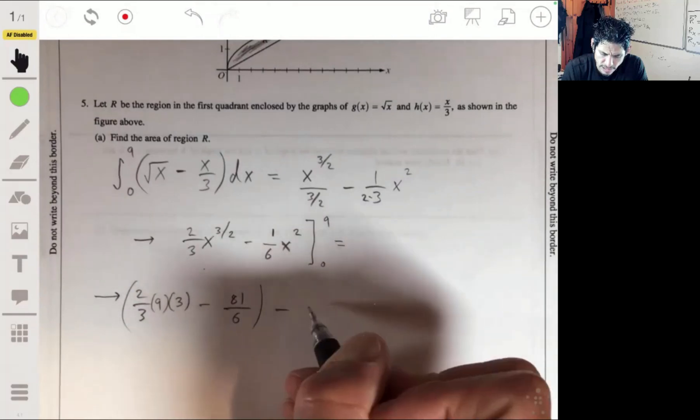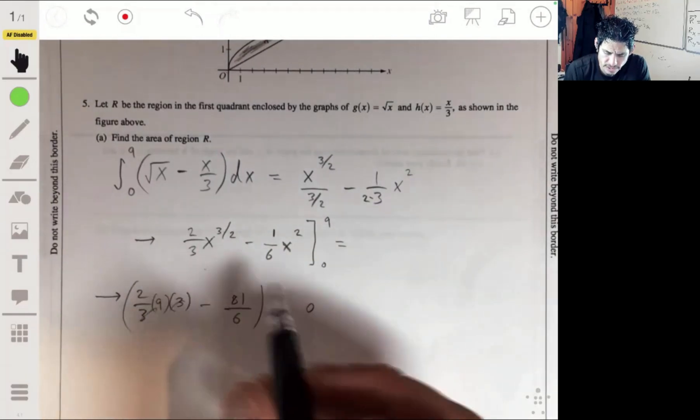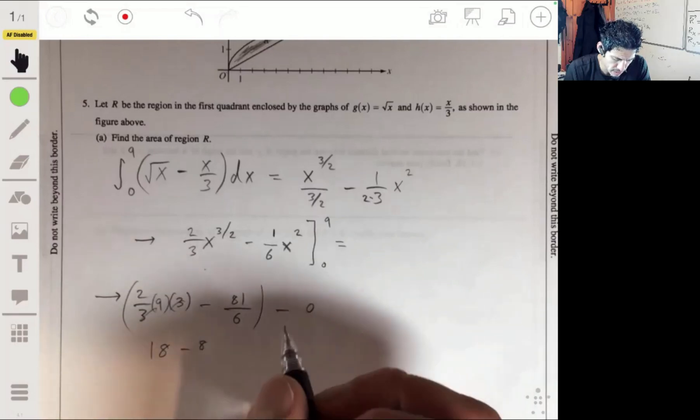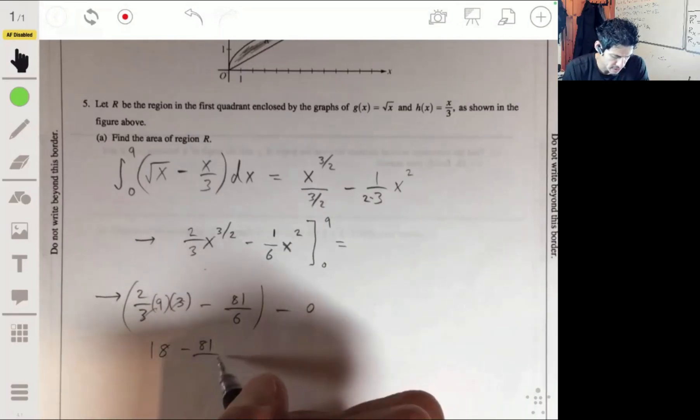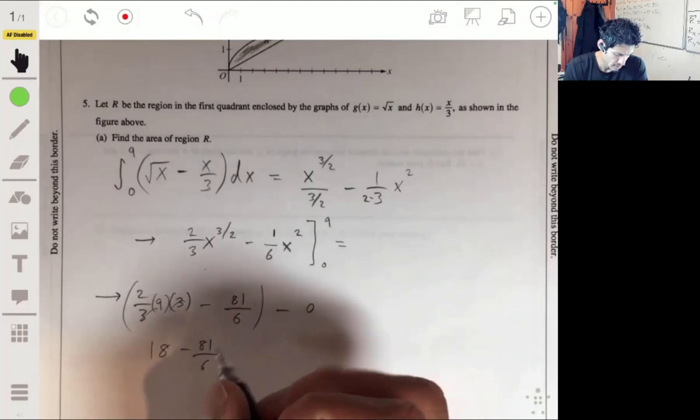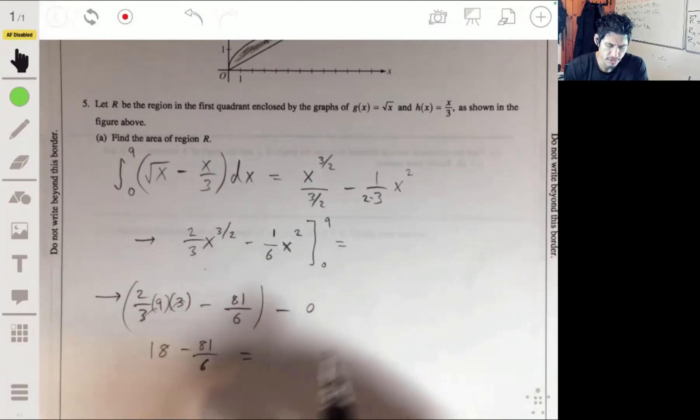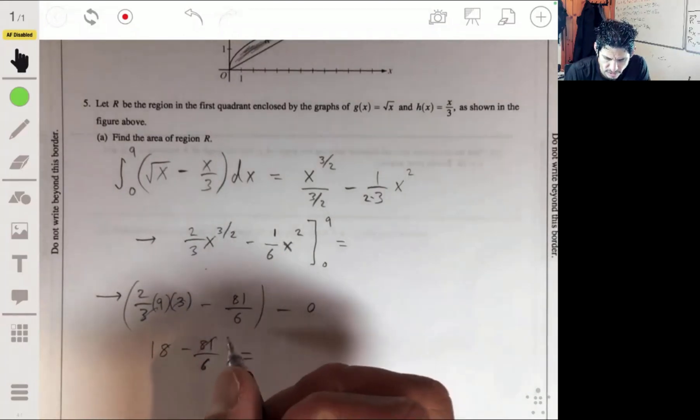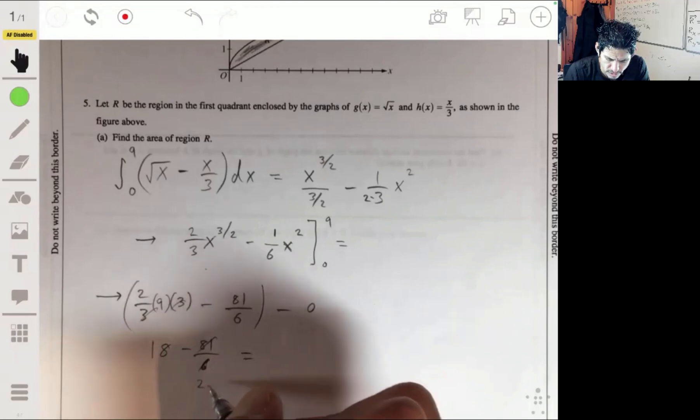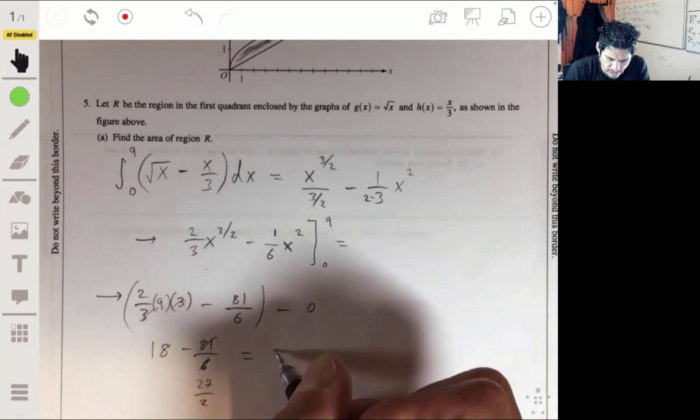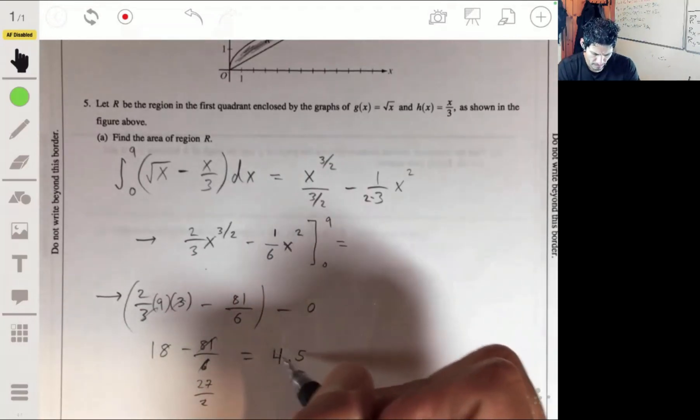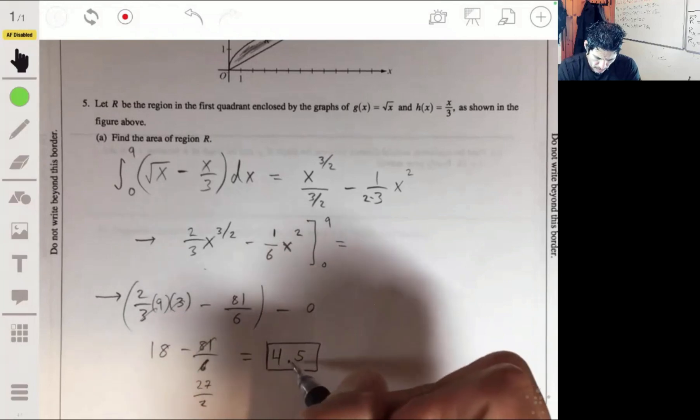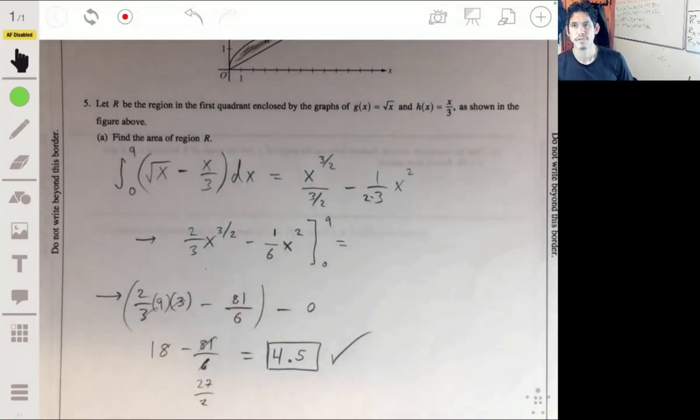Plugging in 0, that just won't do anything. These 3's cancel, so you have 18 minus 81 over 6. You can reduce this. 27 over 2, so 18 minus 13 and a half, so you'll get 4.5. All right, that was simple.